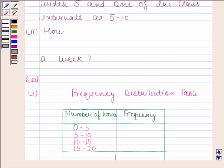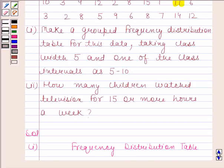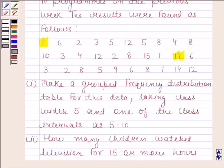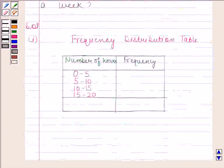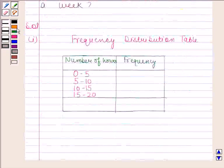Now, looking at the data, we will find the number of values which are covered within the interval 0 to 5. Now, the values covered in this interval are 1, 2, 3, 4, 3, 4, 2, 1, 3, 2. So there are 10 values which are covered within the interval 0 to 5. So frequency of 0 to 5 is 10.